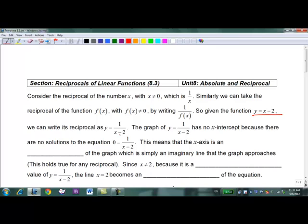The graph of y equals 1 over x minus 2 has no x-intercept because there are no solutions to the equation 0 equals 1 over x minus 2.